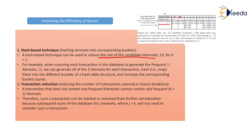While determining L1, if the minimum support count is say 3, then item sets in the buckets 0, 1, 3, and 4 cannot be frequent because those counts are less than 3. So they should be removed from C2. For example, when scanning each of the transactions in the database to generate the frequent item set L1, we can generate all of the two-item sets for each transaction, hash them into the different buckets of a hash table structure, and increase the corresponding bucket count.